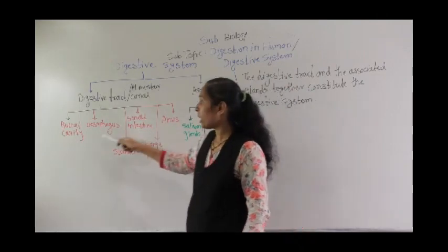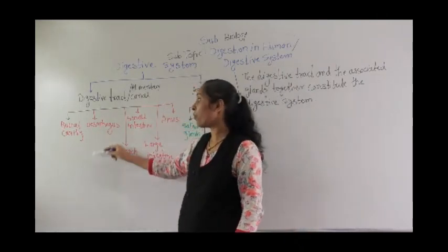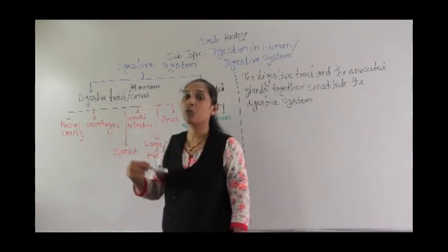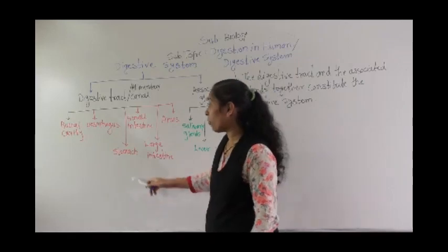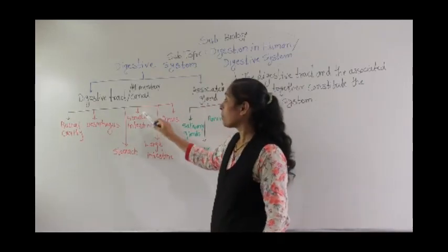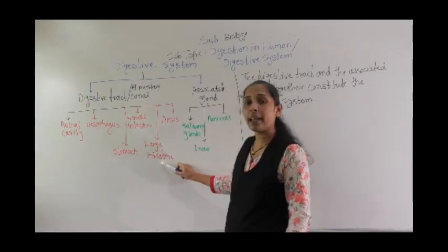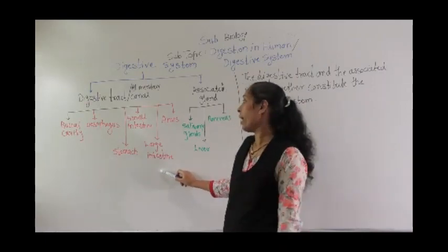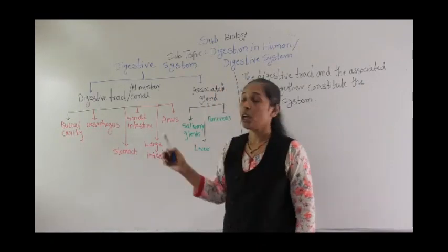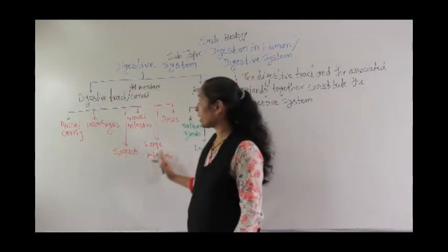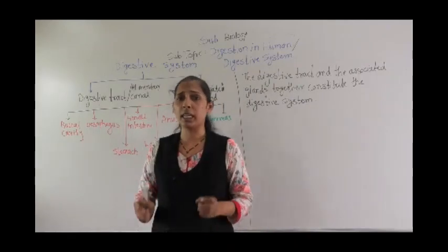The buccal cavity is also called the mouth cavity. Esophagus we can also call the food pipe. Then there is stomach, small intestine, and large intestine, which ends into the rectum. The last part of the alimentary canal is the anus. Along with all these digestive tract organs, the food gets digested.